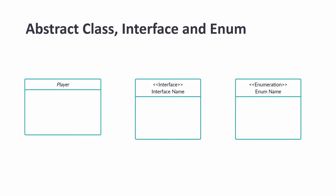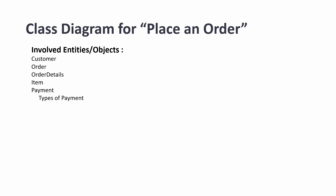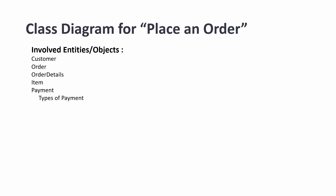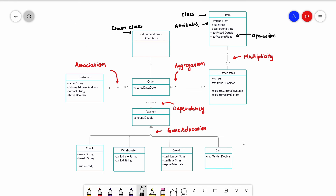Now let's take a real-time example to understand all the relationships and notations we discussed. We'll design a class diagram for a place-order system. The major entities involved are: Customer, Order, OrderDetails, Item, and Payment. A customer can place orders; an order has order details; order details contain items that were purchased; and an order is associated with a payment, which can have various methods like credit card, check, or wire transfer.